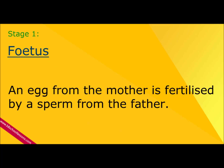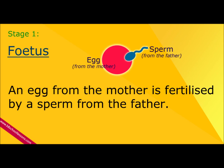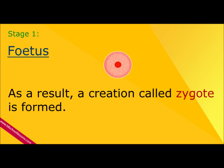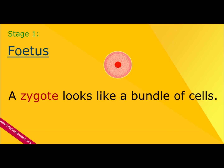Stage 1: Fetus. An egg from the mother is fertilised by a sperm from the father. As a result, a creation called a zygote is formed. A zygote looks like a bundle of cells.